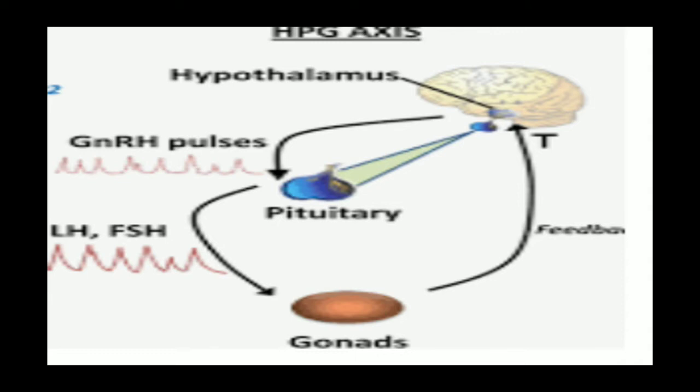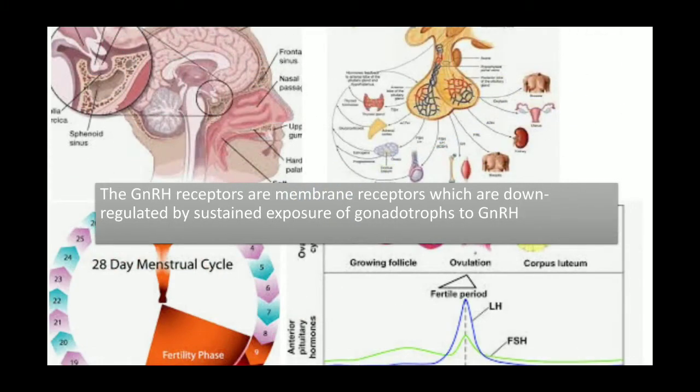The GnRH pulse causes release of LH and FSH, which work on the gonads. The GnRH receptors are membrane receptors which are down-regulated by sustained exposure to gonadotropins. Whenever there is sustained release of gonadotropins such as LH or FSH, there is down-regulation of GnRH.